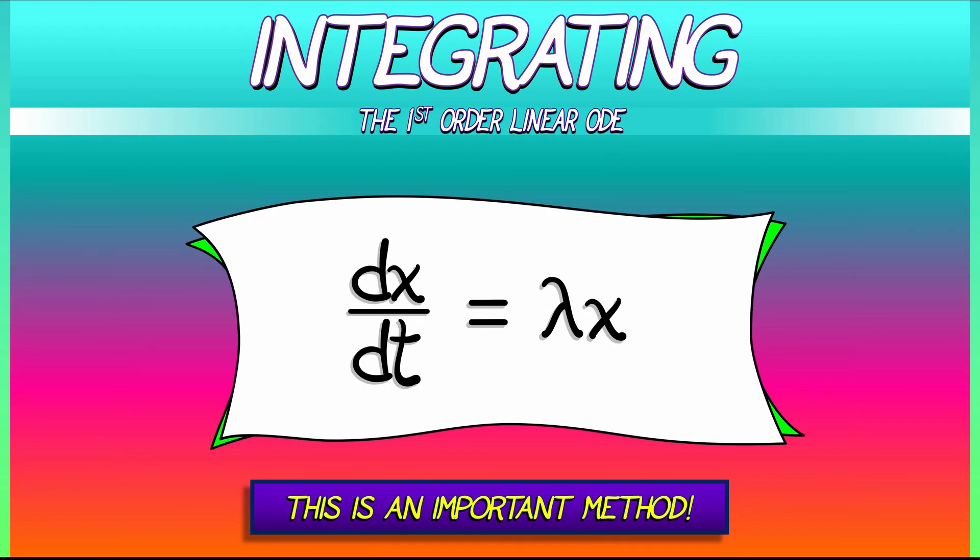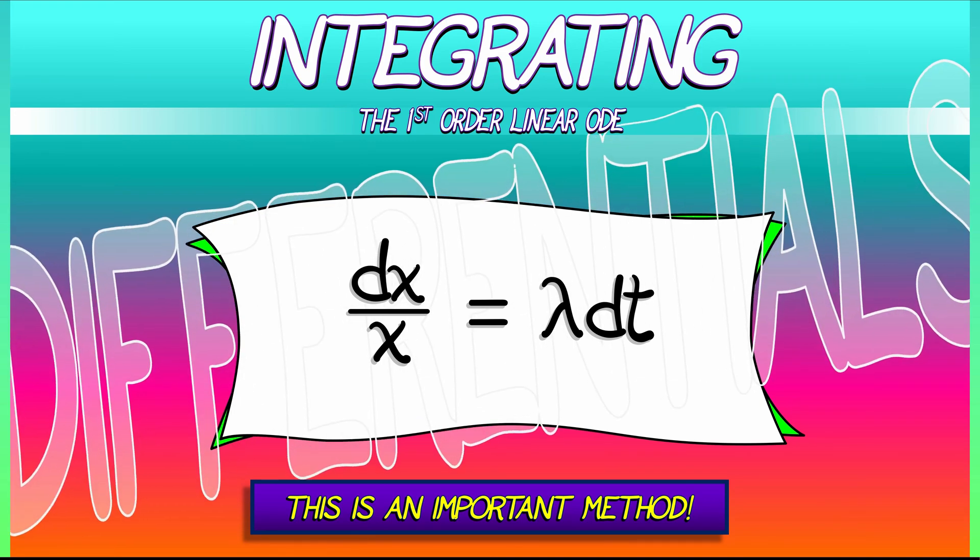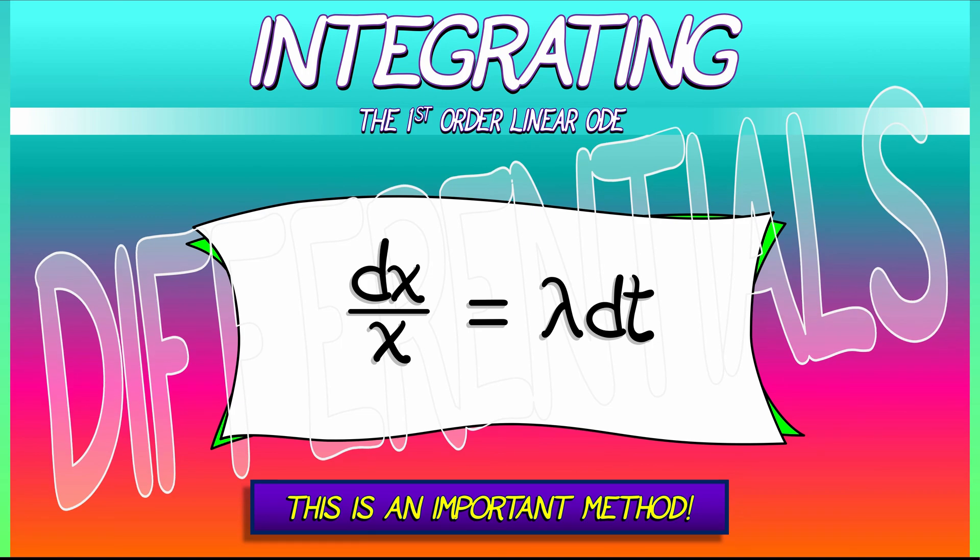Let's see how we get this. We start off with our differential equation, dx/dt equals lambda times x. We separate out the x terms from the t terms, dividing by x, multiplying by dt. This gives us an expression of differentials. You might even call it a differential equation. Oh, that makes sense now.